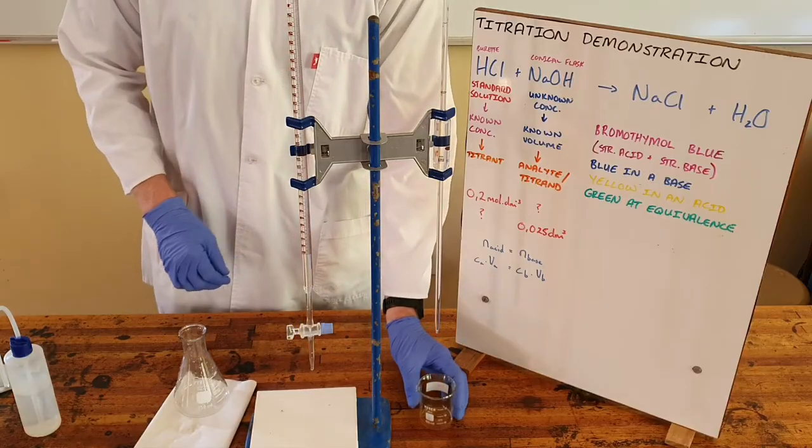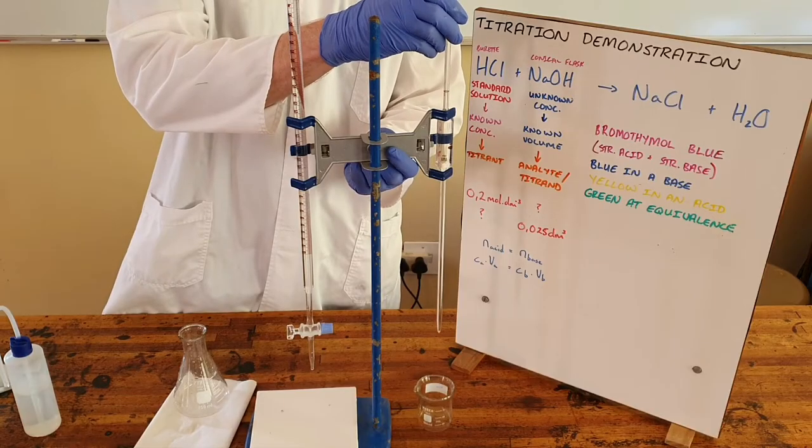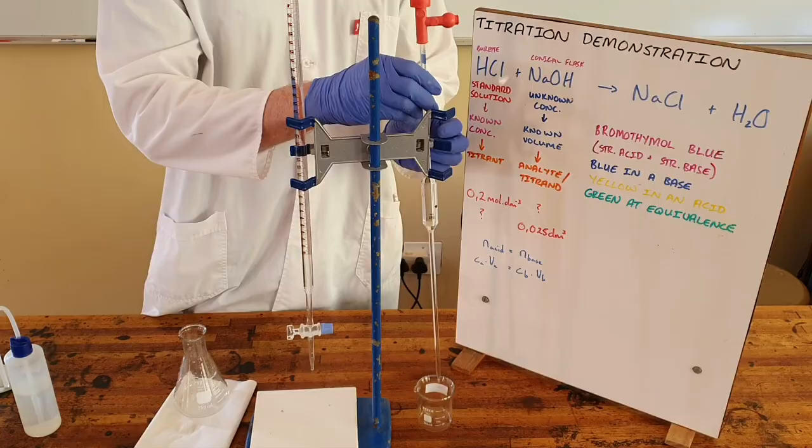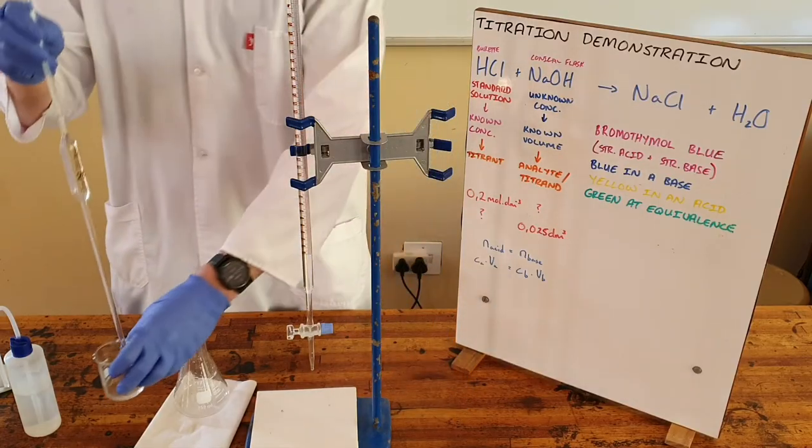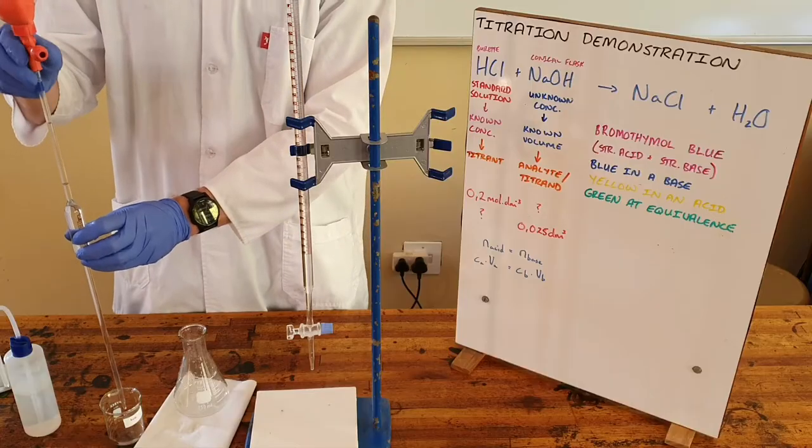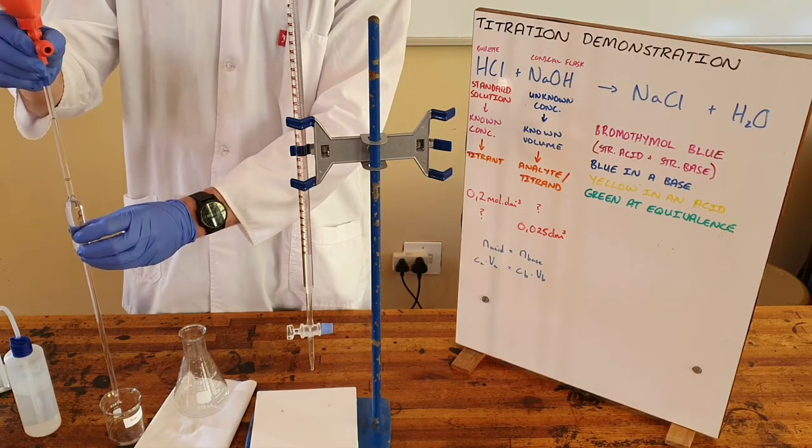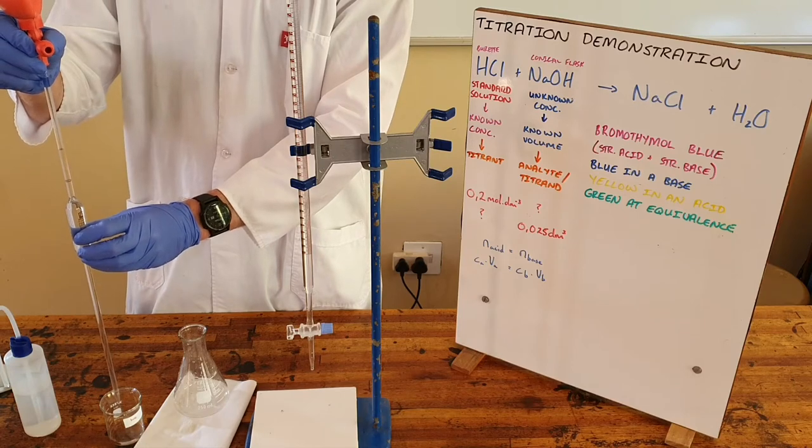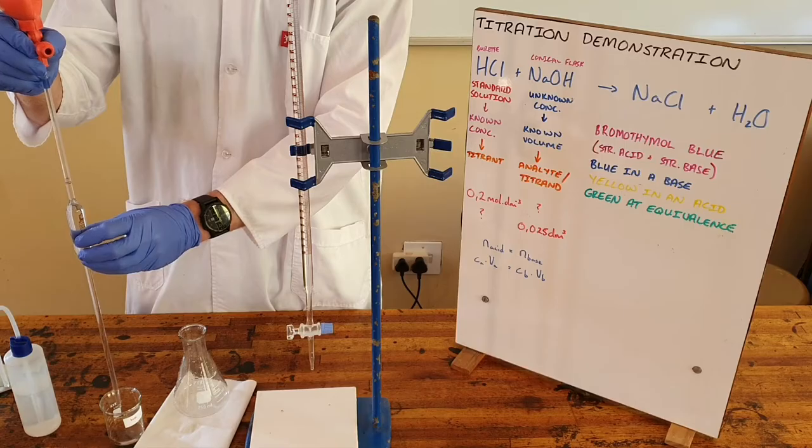So in order to get the known volume of sodium hydroxide we use a pipette. This pipette is marked as 25 milliliters or 0.025 cubic decimeters. We use this pipette filler to ensure that the pipette quantity exactly aligns with what it is marked as.